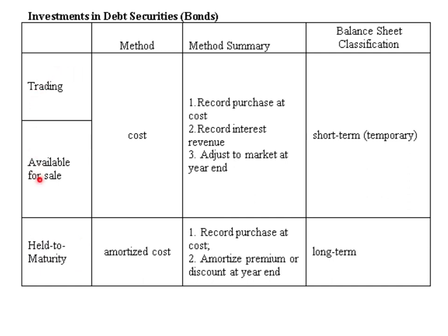Trading and available for sale, on the other hand, have a very similar method to record them. We will be using the cost method. The first two steps are identical — I will show you that in a second — and then the adjustment to market is different, and it is the topic of a different video.